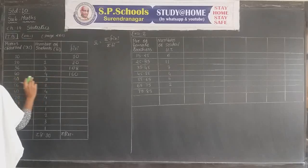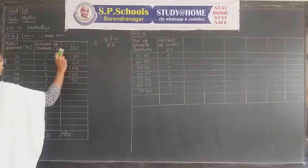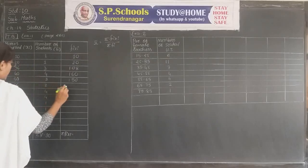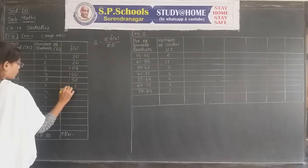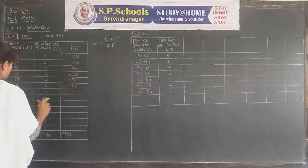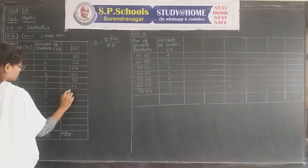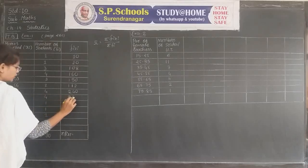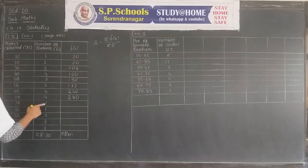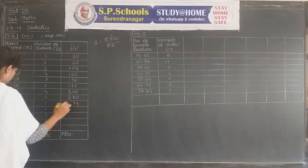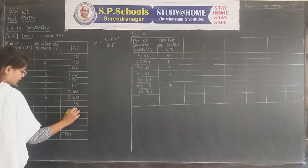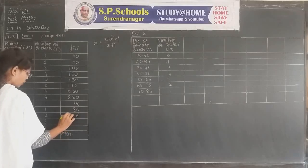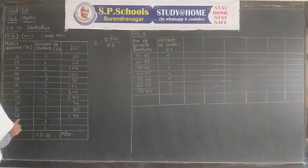Continuing the fi × xi multiplications: 53 × ... gives 150, 56 × 2 gives 112, 64 × ... gives 240, 73 × ... gives 280, 72 × ... gives 112, 74 × ... gives 254.